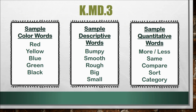Students also have to become familiar with vocabulary that will allow them to accurately classify and sort objects. Some examples are color words such as red, yellow, blue, green, and black; descriptive words such as small, big, rough, smooth, bumpy, round, or flat; and quantitative words such as more, less, same amount as, compare, sort, and category.